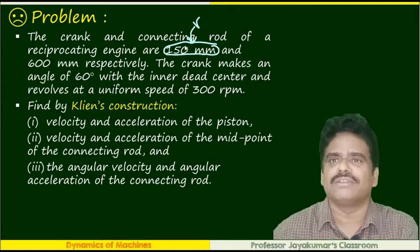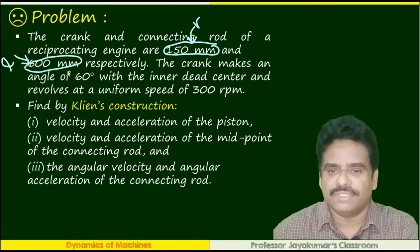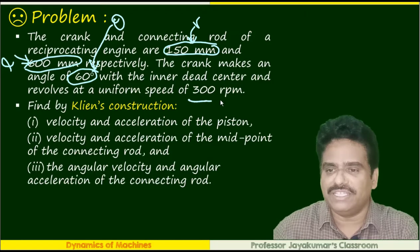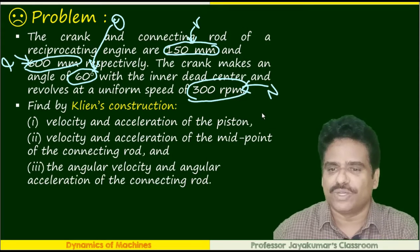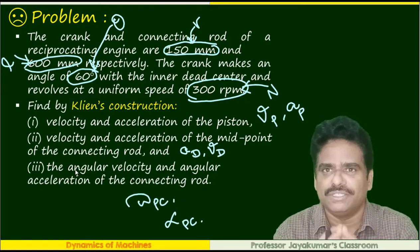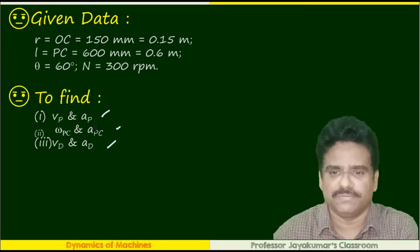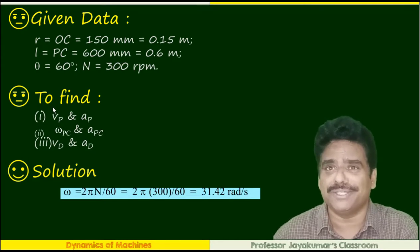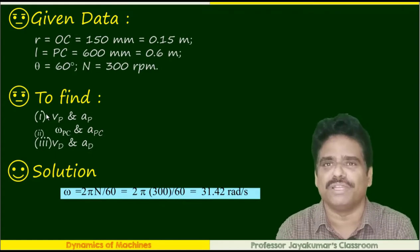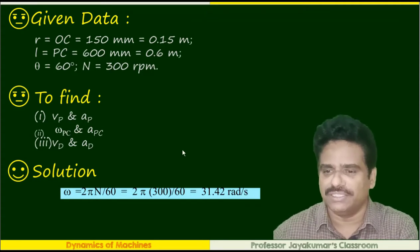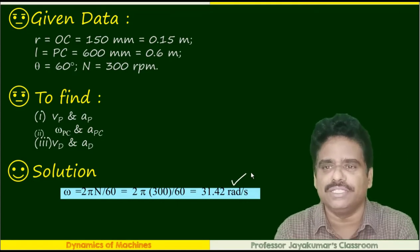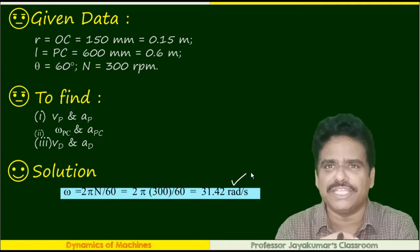The data given: crank length R, connecting rod length L, crank angle 60 degrees, and RPM of the crank N. To start with, since the RPM N is given, we can directly find the angular velocity of the crank omega using the formula omega equals 2πN divided by 60. Substituting the values, we get omega equal to 31.42 radians per second.